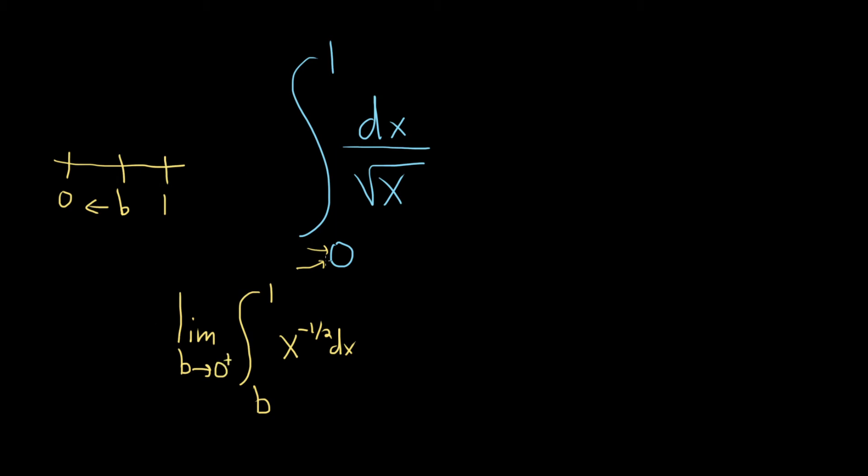You basically plot your limits of integration, you put your variable here, and it'll tell you which way it's approaching from. For example, if we were approaching one, it'd be from the left.